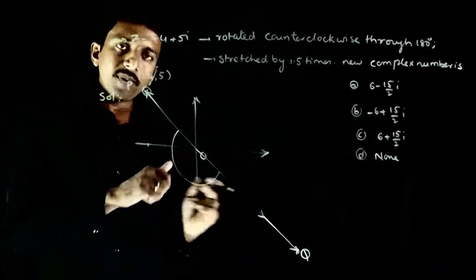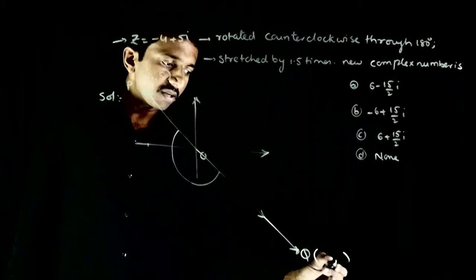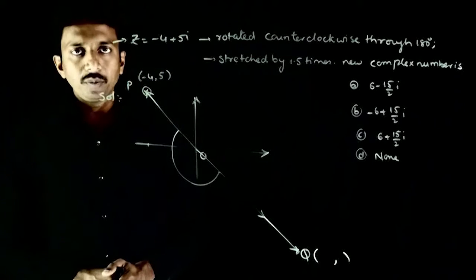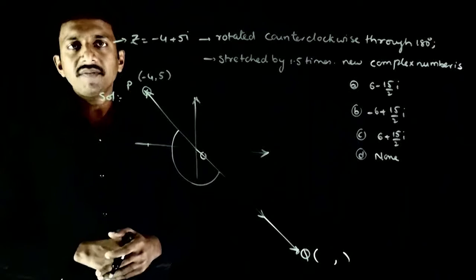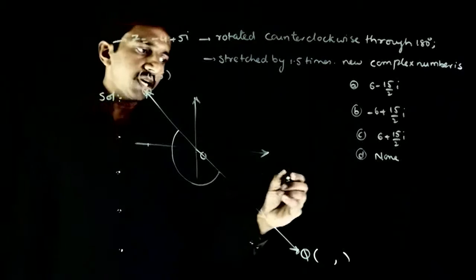So OQ bar will be another position vector. So the question is, what are the coordinates corresponding to the point Q? So this is a very straightforward question based on the concept of rotation.